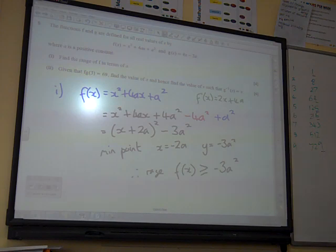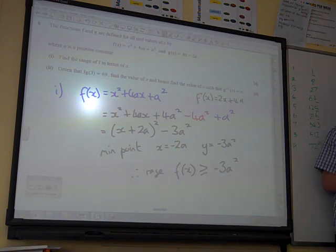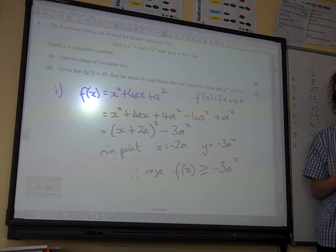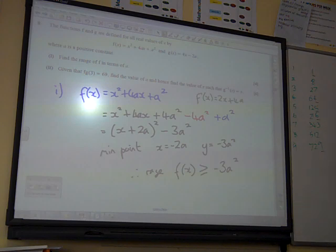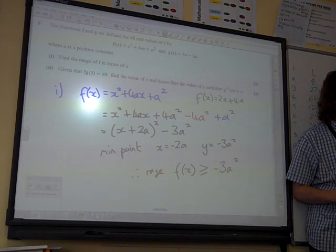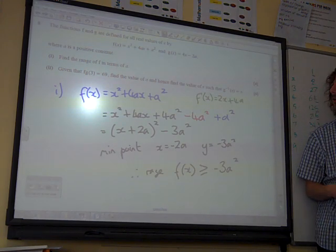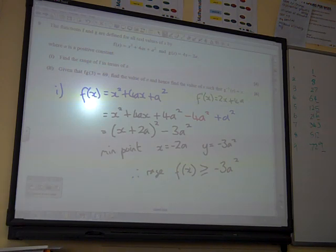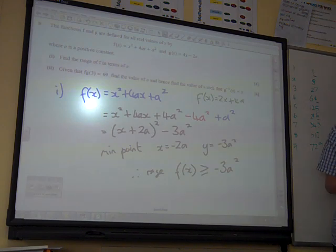Given that f of g of 3 is 69, find the value of a, and hence find the value of x such that the inverse of g of x is equal to x. So what are we going to do? I think we need to do something about what f of g of 3 is actually going to be, don't we? Let's think about that function.